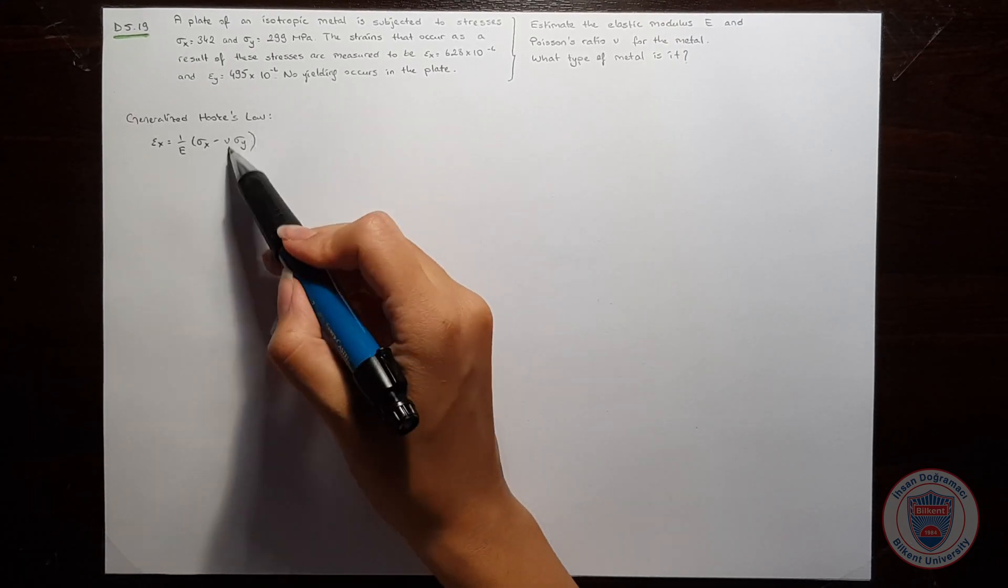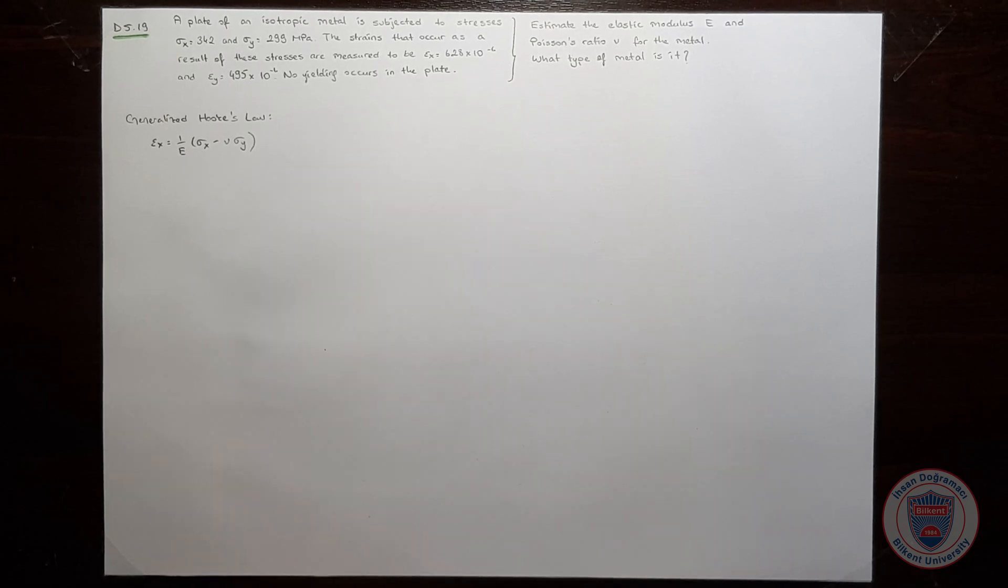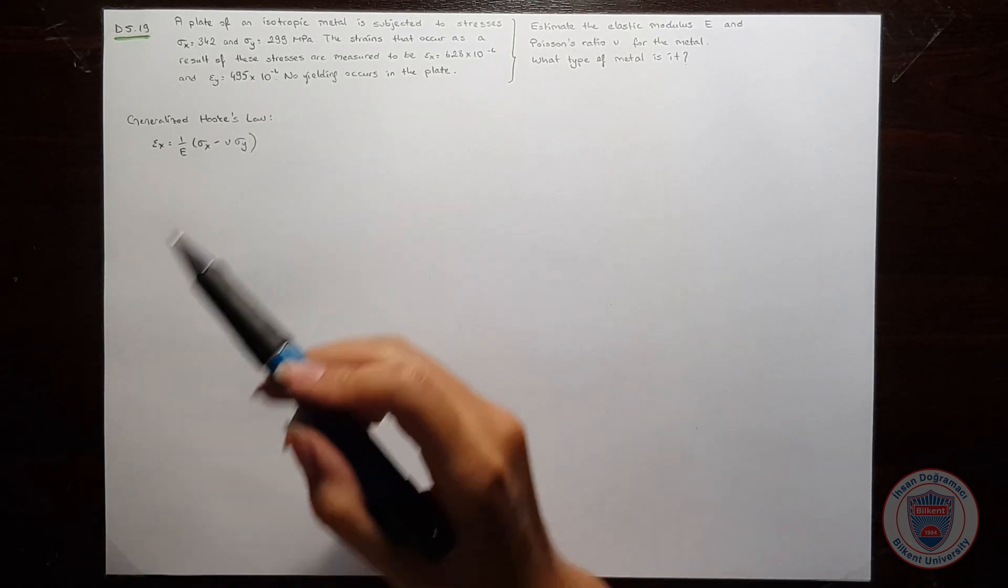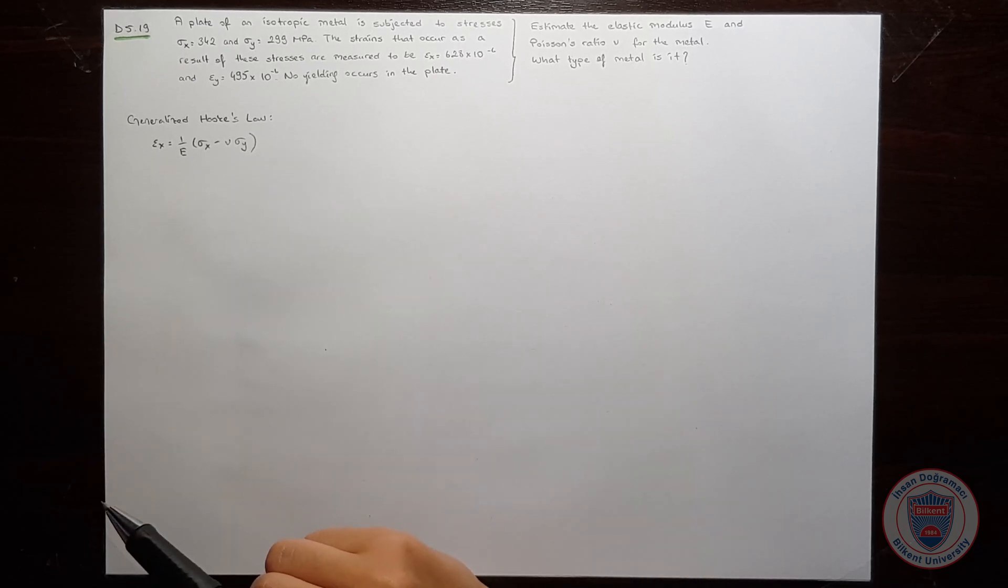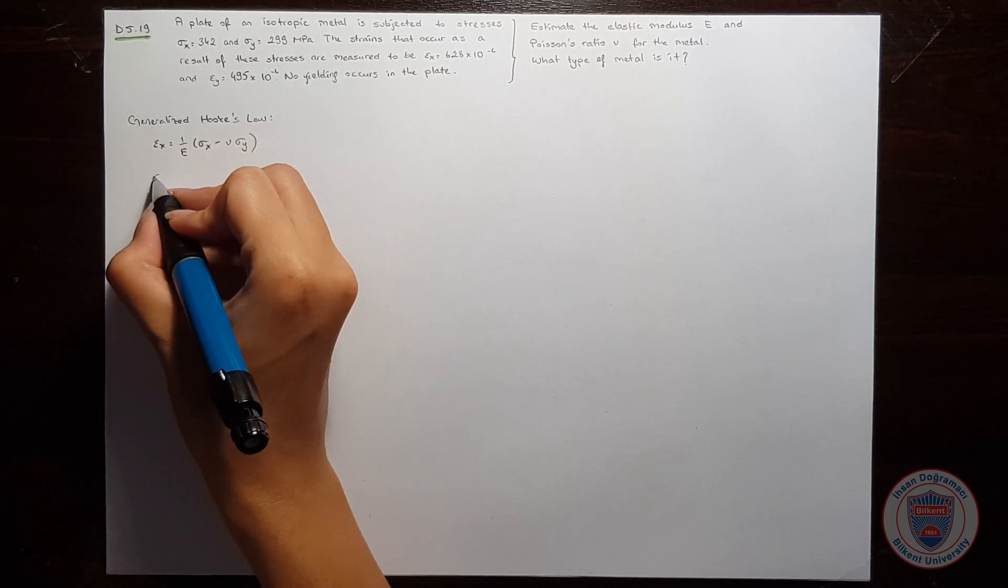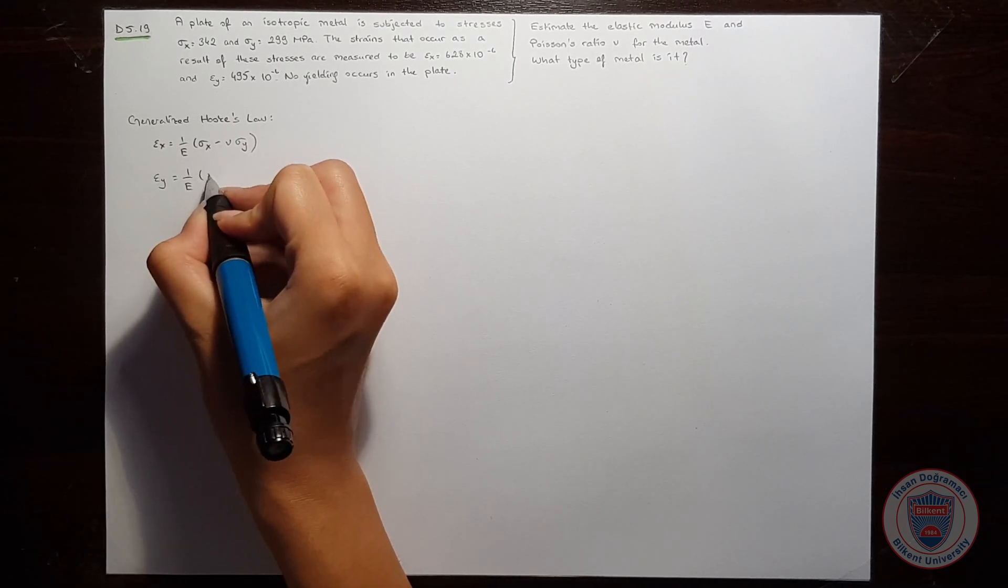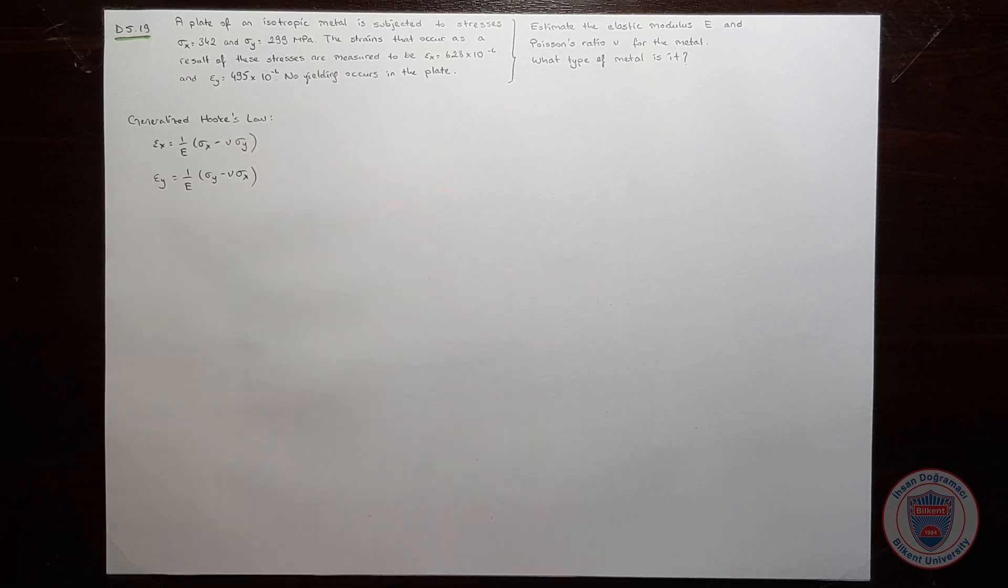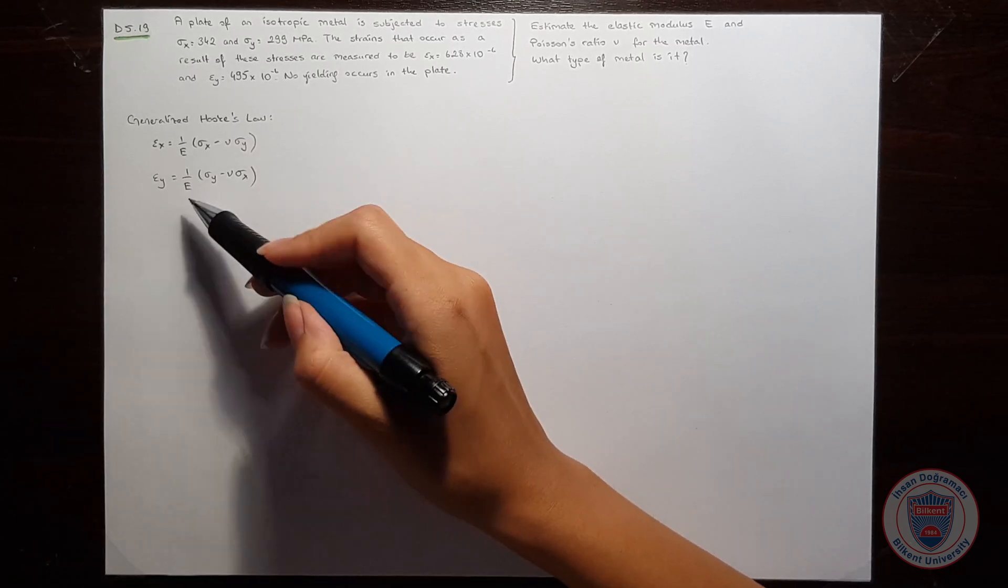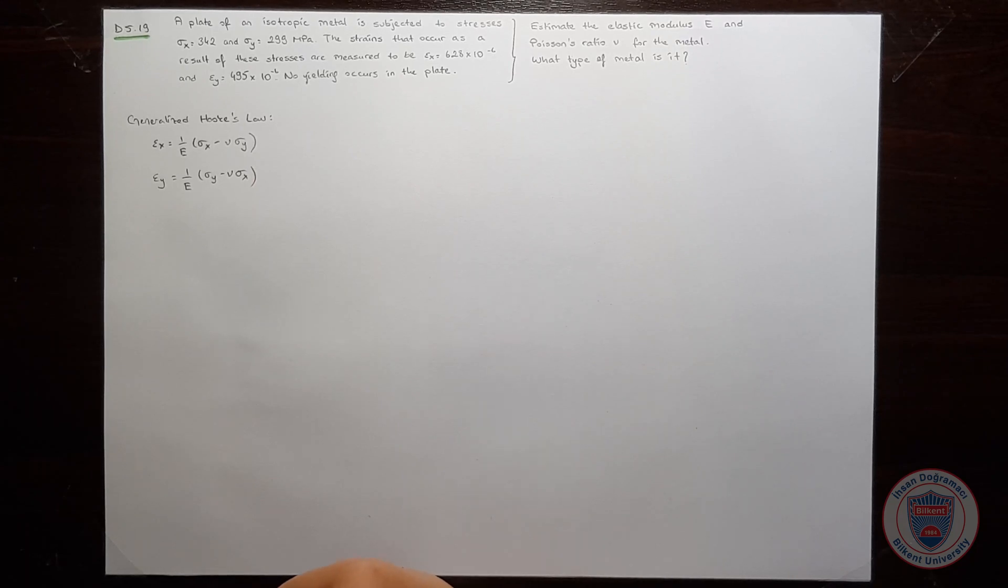Actually, we also have σz in the equation, but since no yielding occurs, we will assume that σz is zero, so I won't write it here. Similarly, εy is equal to 1 over E times σy minus Poisson's ratio times σx. We need to isolate Young's modulus and Poisson's ratio so that we can calculate their values.